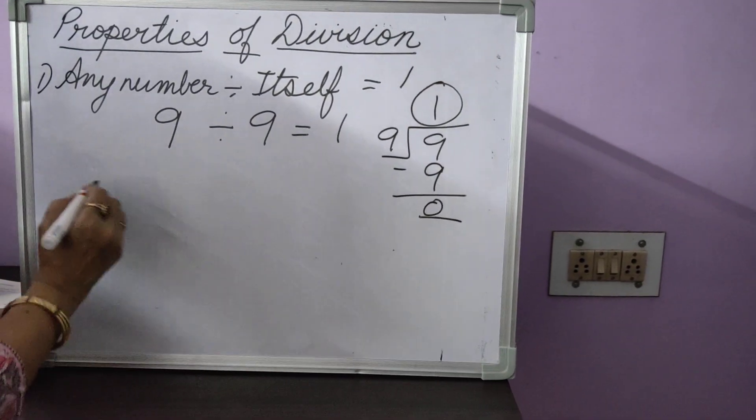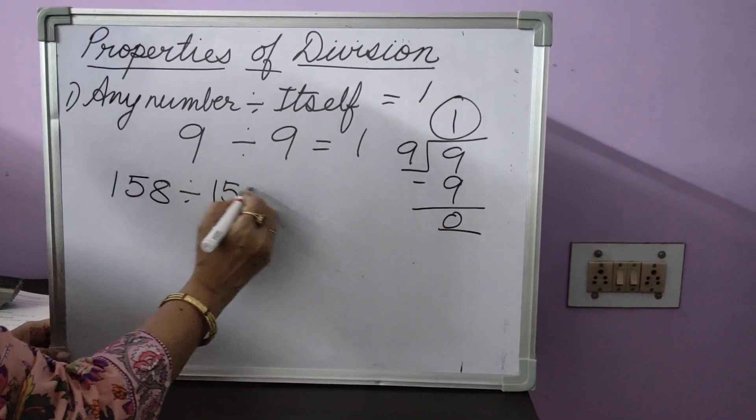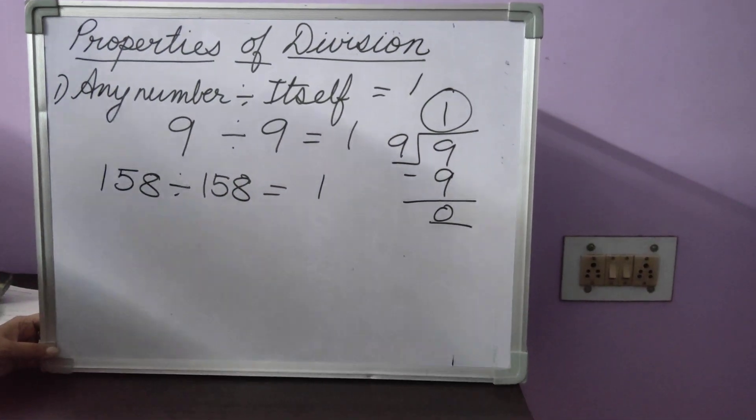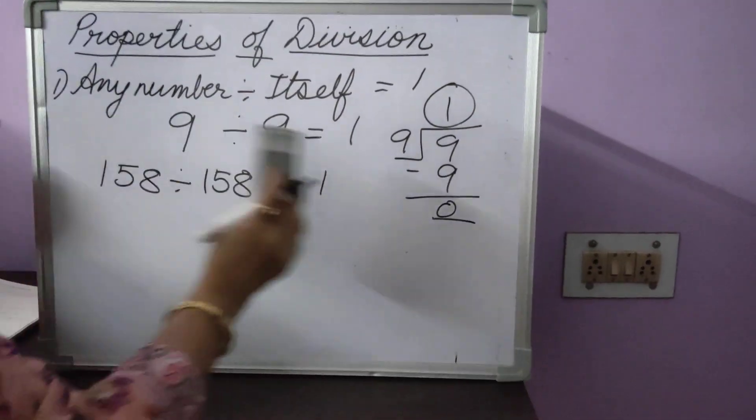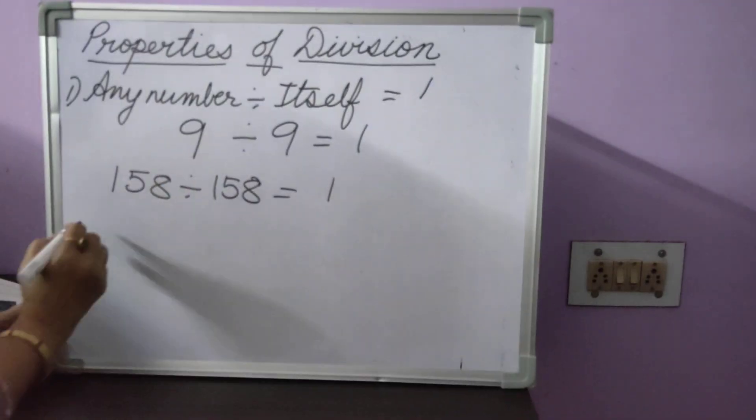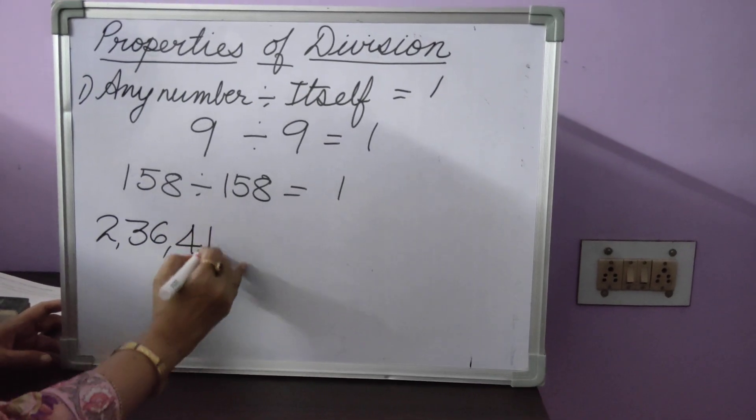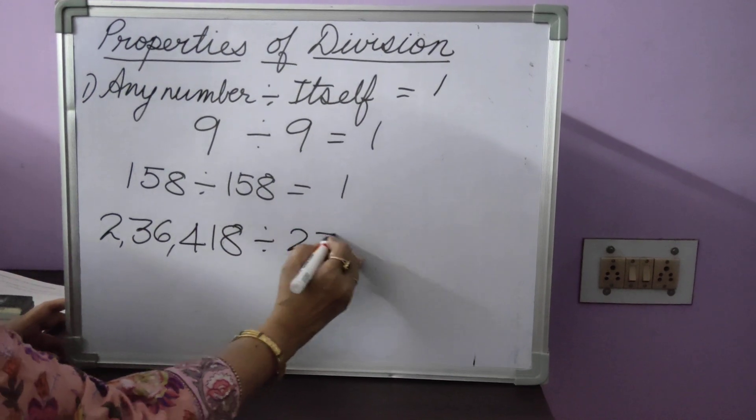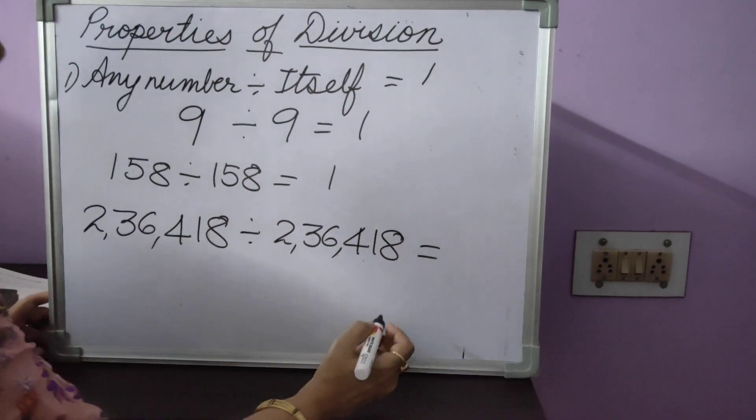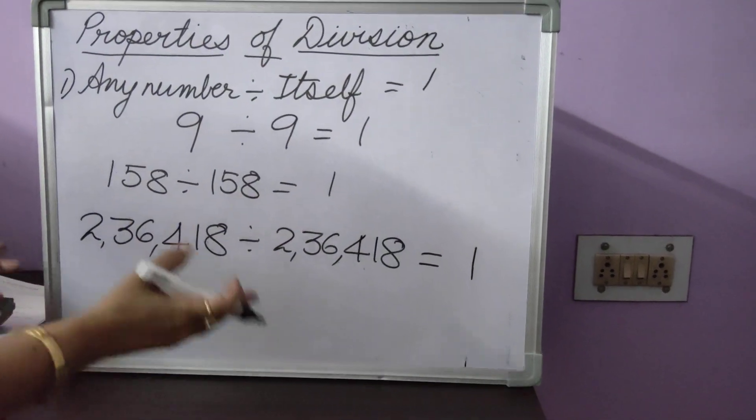In the same way, even if you take a very big number, 158 divided by 158, your answer will always be 1. You do not have to do any type of working. No working required, no division required. Just simply 2,36,418 divided by 2,36,418 will also be equal to 1. We are not dividing it by the long division or any division.